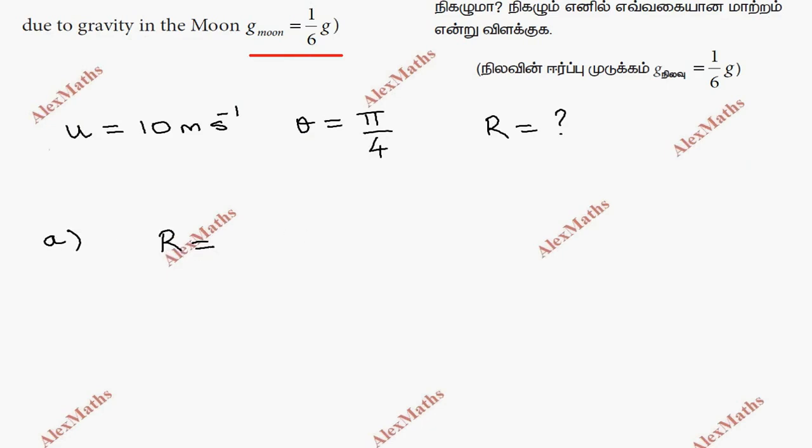So the first part is the range formula: R equals u squared sin 2θ divided by g. Substituting values: 10 squared sin 2θ, where theta is 2 into 5 by 4, whole divided by g value 9.8 meter per second squared.